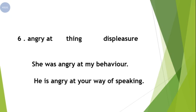Preposition number six is 'angry at.' The meaning of 'angry at' is displeasure — narazgi. Keep in mind that 'angry at' is used with a thing — yeh kisi cheez ke liye istamal hota hai. For example: 'She was angry at my behavior' — behavior is a kind of thing. 'He is angry at your way of speaking' — speaking is a kind of thing.